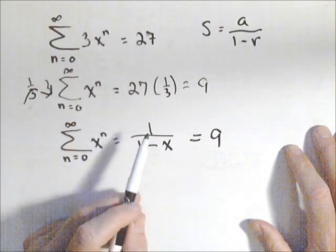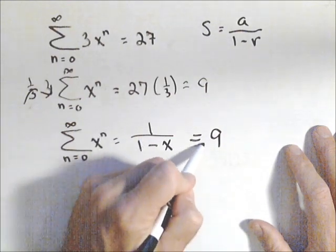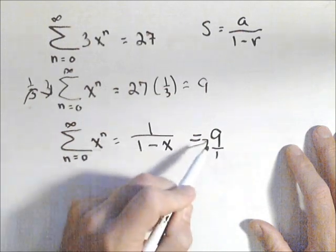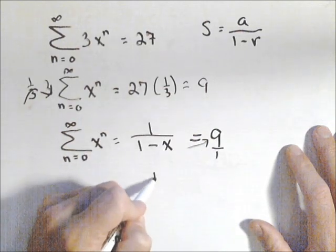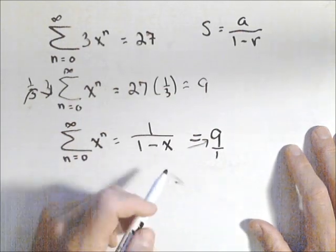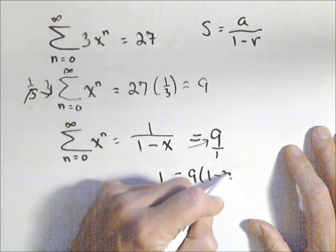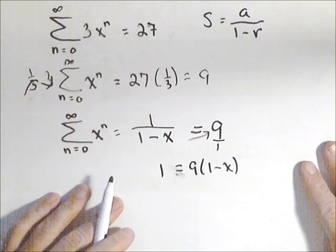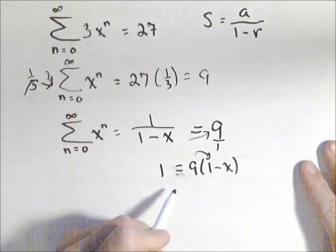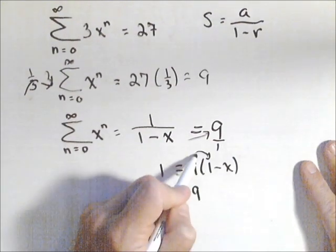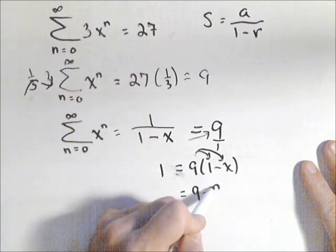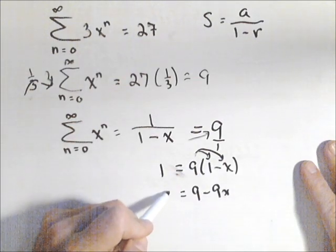It's actually not a bad equation. What I can do is cross multiply the one minus x, so I get one equals nine times one minus x. Distribute the nine, so I get nine minus nine x equals one.